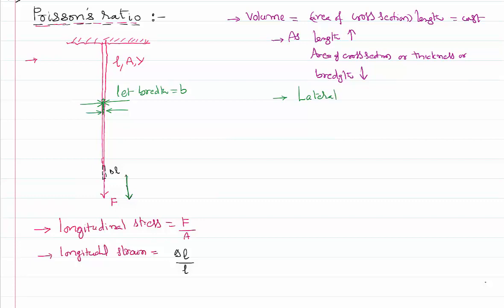That's why this kind of a strain is called something like lateral strain. Lateral means perpendicular to longitudinal, defined as ratio of change in the breadth to its original breadth.